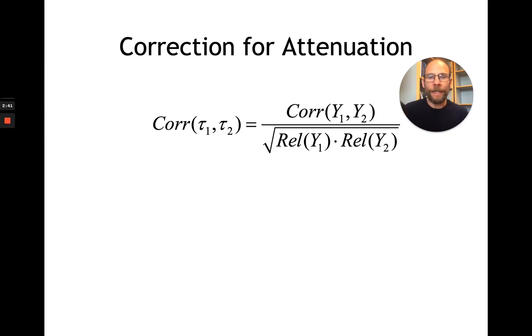And then you can calculate or estimate the correlation between true scores by dividing your observed correlation by the square root of the product of the reliabilities of those test score variables, assuming that measurement errors are uncorrelated for the different tests. This formula was first provided by Charles Spearman in 1904 to provide for this correction.